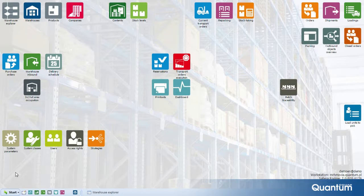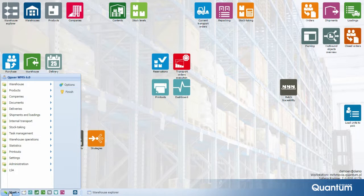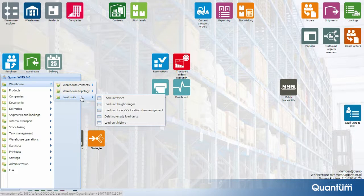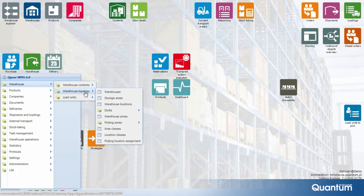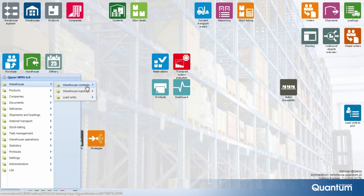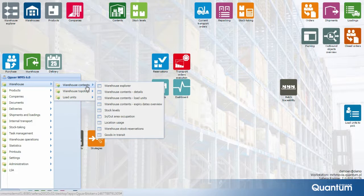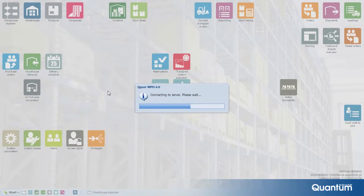This set of functionalities enables the management of three main groups of storage objects. Management of all types of load units — that is pallets, cartons, boxes — and review of the complete history of their warehouse operations. Definition of warehouse types and configuration of their topology, including storage zones, areas and locations. Review of storage inventory and item counts down to the SSCC number, batch and storage location.